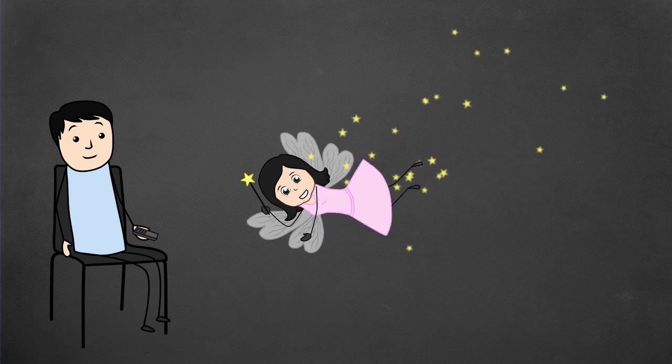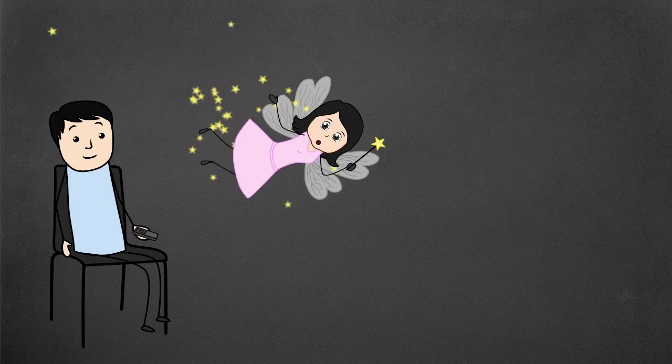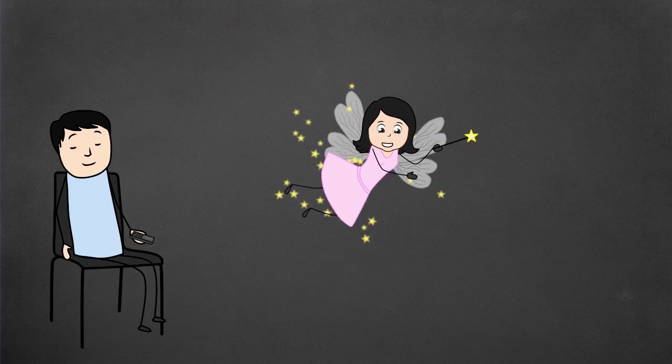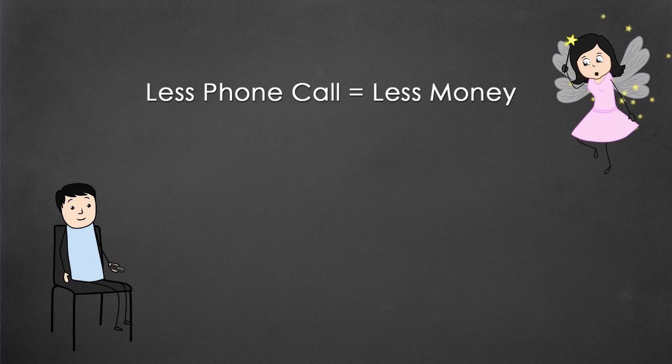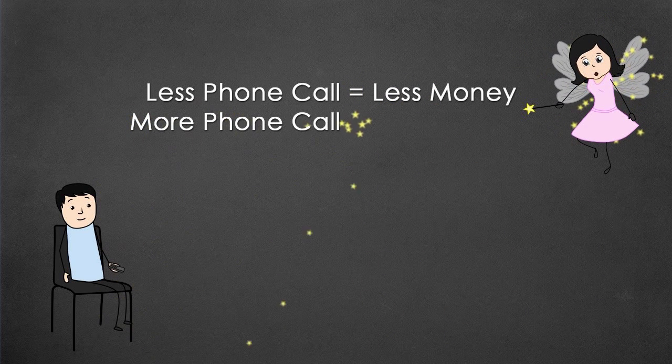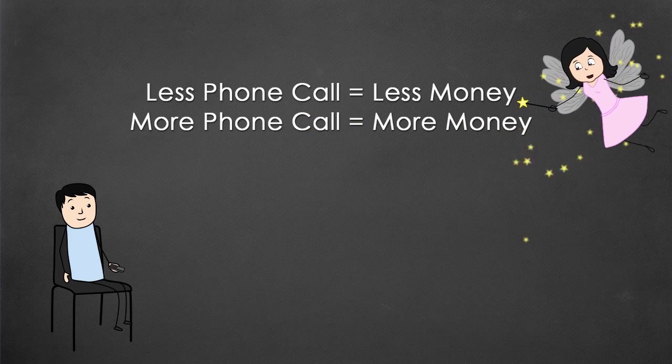In our everyday lives, the more we use a facility, the more we pay for it. So if someone makes less phone calls, then he spends less money. And if someone speaks whole day over phone, then his mobile balance depletes quickly.